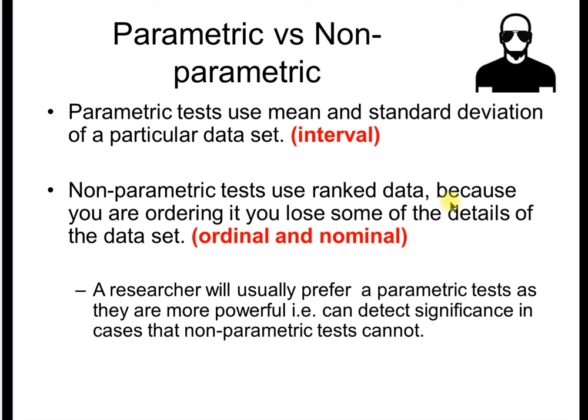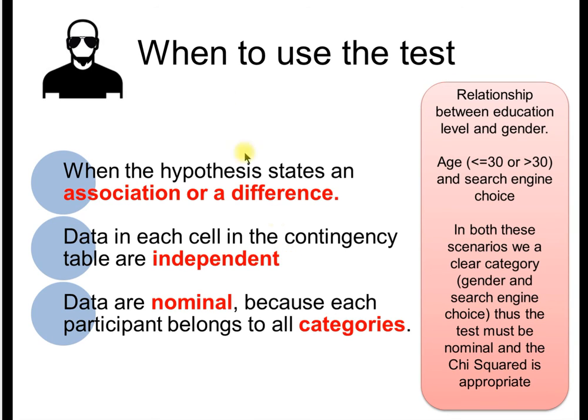Researchers usually prefer parametric tests as they're more powerful and can detect significance in cases that non-parametric tests cannot. But non-parametrics tend to be a little easier to carry out. So when do we use this test? This is the most important slide on chi-squared. You must know each and every single one of these criteria. You can use chi-squared very rarely amongst statistical tests for both an association or a test for difference.